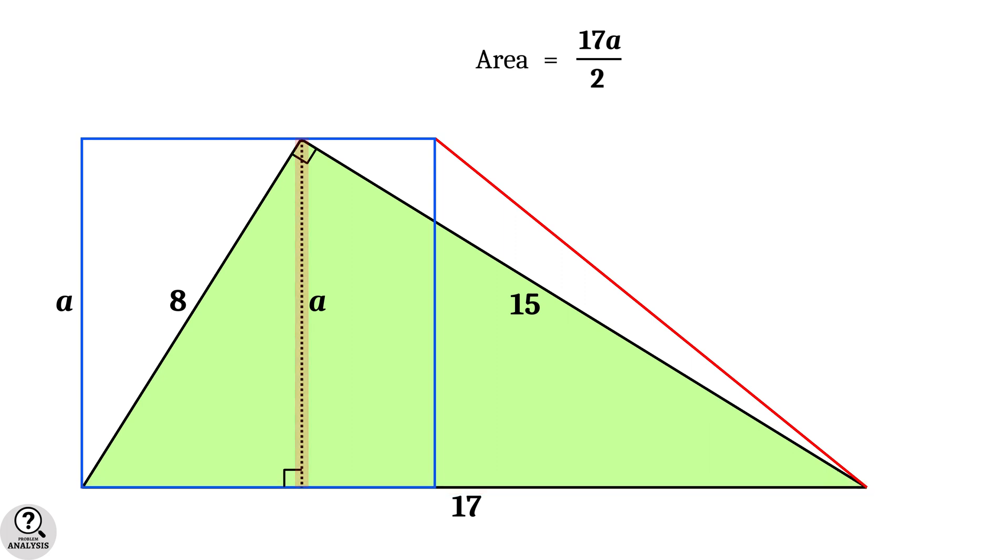But, since the triangle is a right triangle, area can be calculated by the formula, half of the product of its perpendicular sides. And the perpendicular sides are 8 and 15. So the area is equal to half into 8 into 15, equal to 60 square units.